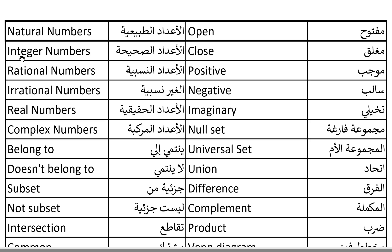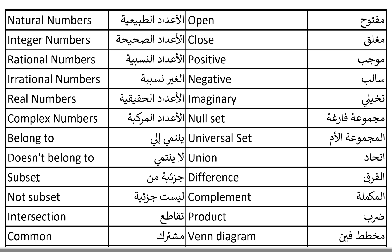Element. Element. Interval. Interval. Natural numbers. Natural numbers. Integer numbers. Integer numbers. Rational numbers. Rational numbers. Irrational numbers. Irrational numbers. Real numbers. Real numbers. Complex numbers. Complex numbers.